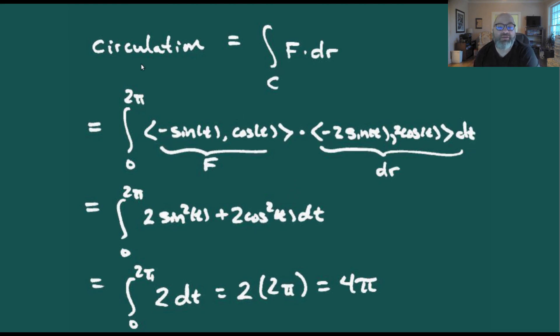In calculating the circulation we do the line integral over C of F dot dr. We're plugging in all the values that we have, this gives us the integral from zero to 2π. Negative sin(t), cos(t) for our vector field.